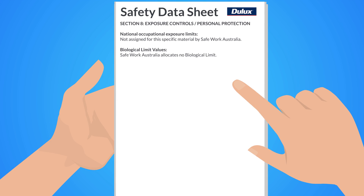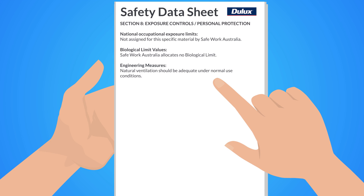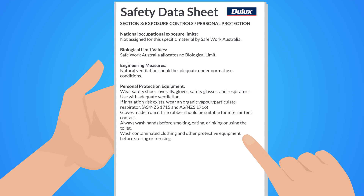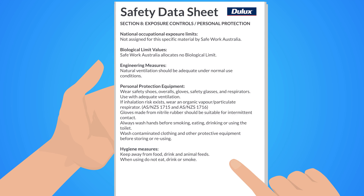Another must-read is Section 8, which starts with the exposure limits for the chemical covered by the SDS. Next listed are the engineering controls or measures — above PPE on the hierarchy of controls, engineering controls are a more effective way of reducing hazards. Then appears the personal protective equipment or PPE. Ensure you take notice of the type of PPE suggested and any standards given, as donning incorrect PPE or not following correct protocols may offer little protection. Finally, hygiene measures are provided.